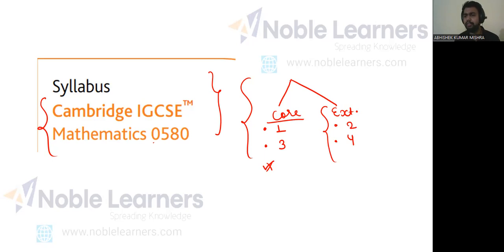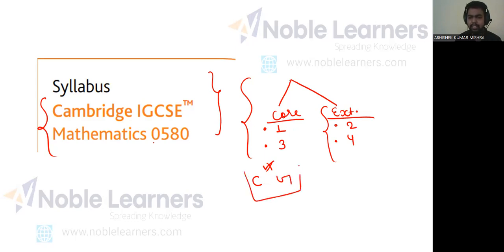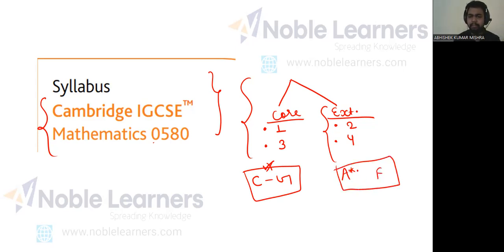If a student is pursuing their future in Mathematics but is not very good at it, I would suggest going for Extended because Extended is not that tough. If you work hard and have a good tutor, you can probably score good grades in Extended Mathematics as well. In Core, the highest grade one can get is C and the lowest is G. In Extended, the highest grade is A-star and the lowest is F. This grading system is uniform across all Mathematics courses.